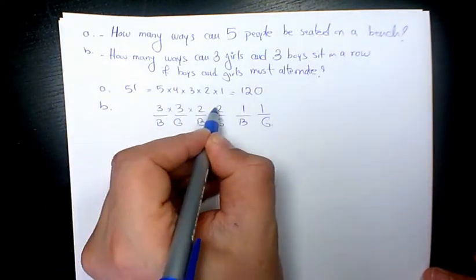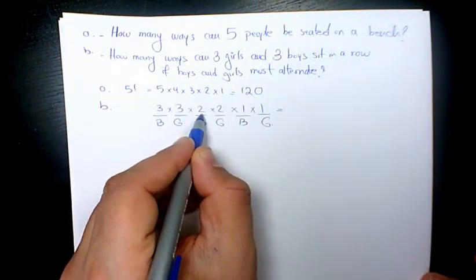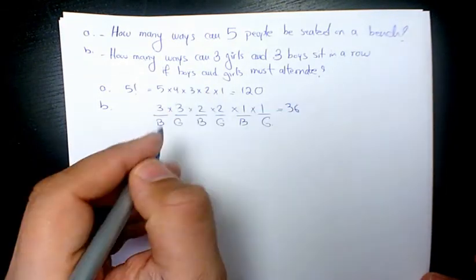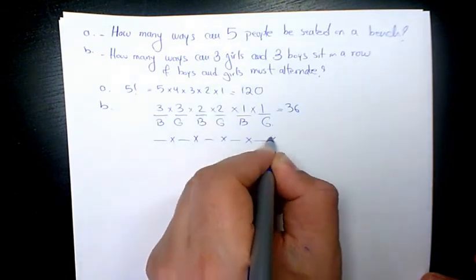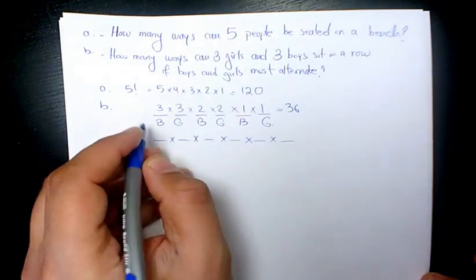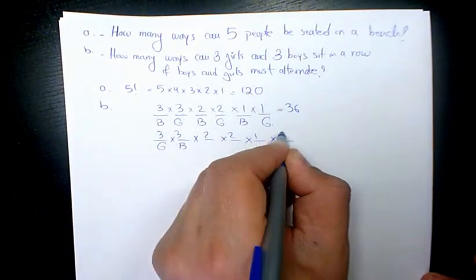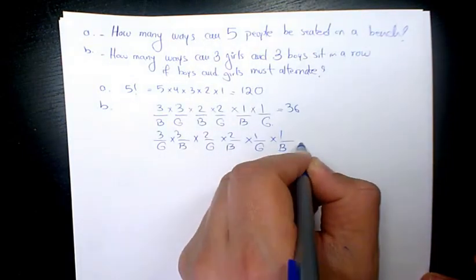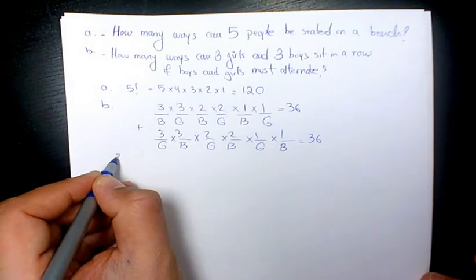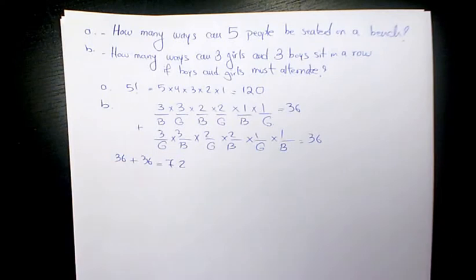So that's gonna be 3×3=9, times 2=18, times 2=36, and another possibility is gonna be when we start with girls. So same thing but girls first, that's gonna be another 36, and then you add them so it's gonna be 36+36, that's gonna be 72.